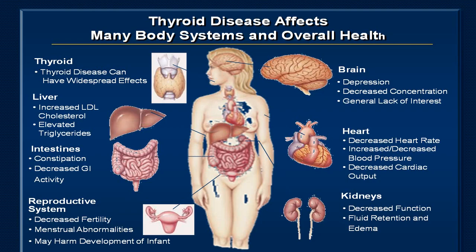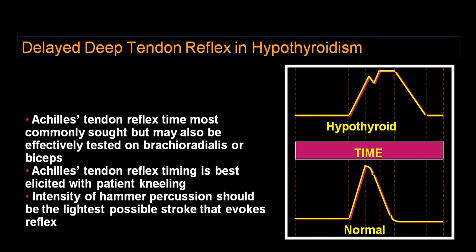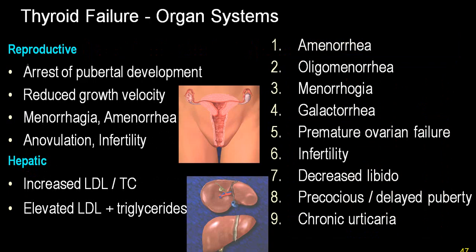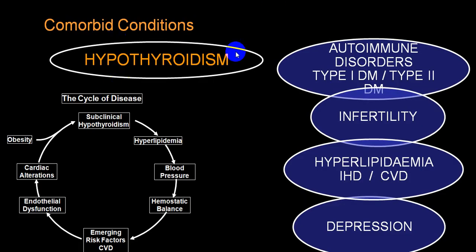Organ-wise features: thyroid, liver, intestine, reproductive system, brain, heart, kidney — symptoms organized system-wise. Delayed tendon reflex is particularly well elicitable in the biceps and knee jerk. Hypothyroidism is frequently associated with autoimmune disorders (type 1 or type 2 diabetes), infertility, hyperlipidemia leading to atherosclerosis, ischemic heart disease, cerebrovascular disease, and depression. Blood pressure is low due to decreased blood volume; endothelial dysfunction contributes to ischemic heart disease and obesity.